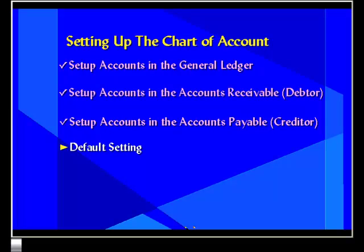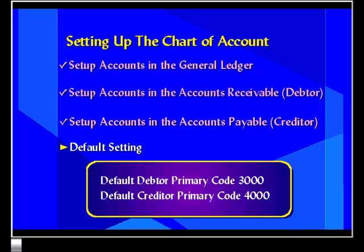The default setting is on default. By default, UBS sets the primary code for debtor to 3,000 and the primary code for creditor to 4,000. However, if you do not wish to adopt the default numbering scheme, UBS allows you to redefine the primary code.